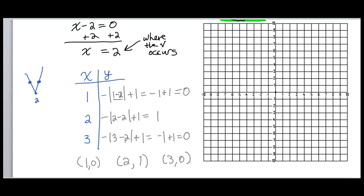I'm going to plot those points and hopefully see a V. Starting with point (1, 0): go to the right 1, stop at 0. Then point (2, 1): go to the right 2 and up 1. Then point (3, 0): go to the right 3, don't go up or down. Now I can draw the V, and this time it is upside down, which is fine.